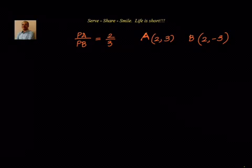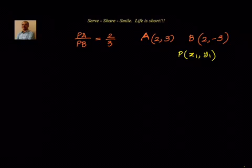Find the equation of locus of P if the distances from P to the points A and B are in the ratio 2 is to 3. So we know that PA by PB equals 2 by 3, and we have to use the distance formula for that. What we will do? We will write down P as (x1, y1). PA by PB is 2 by 3 — we know that whenever we find a distance formula we will have square roots.